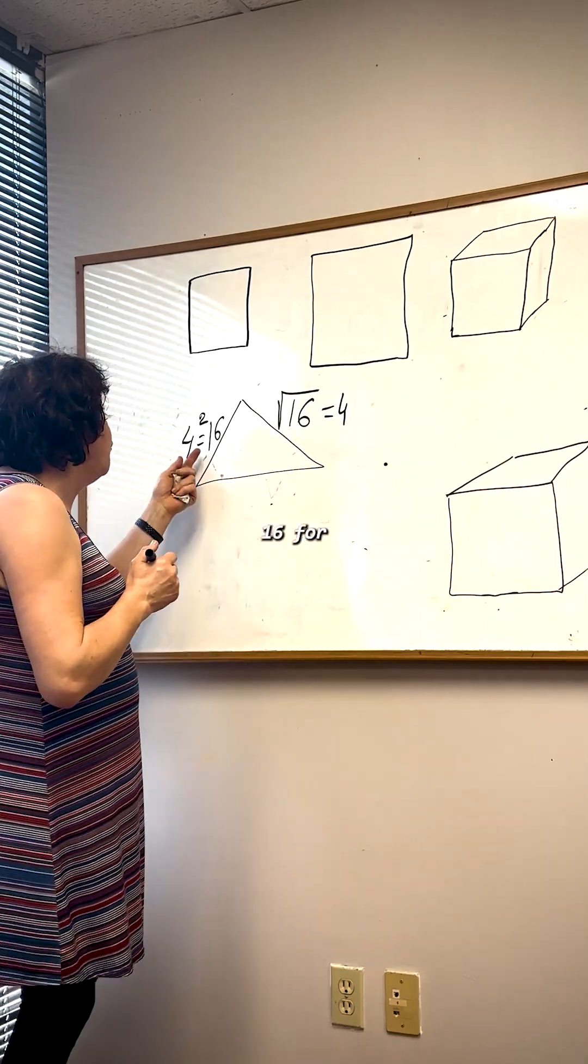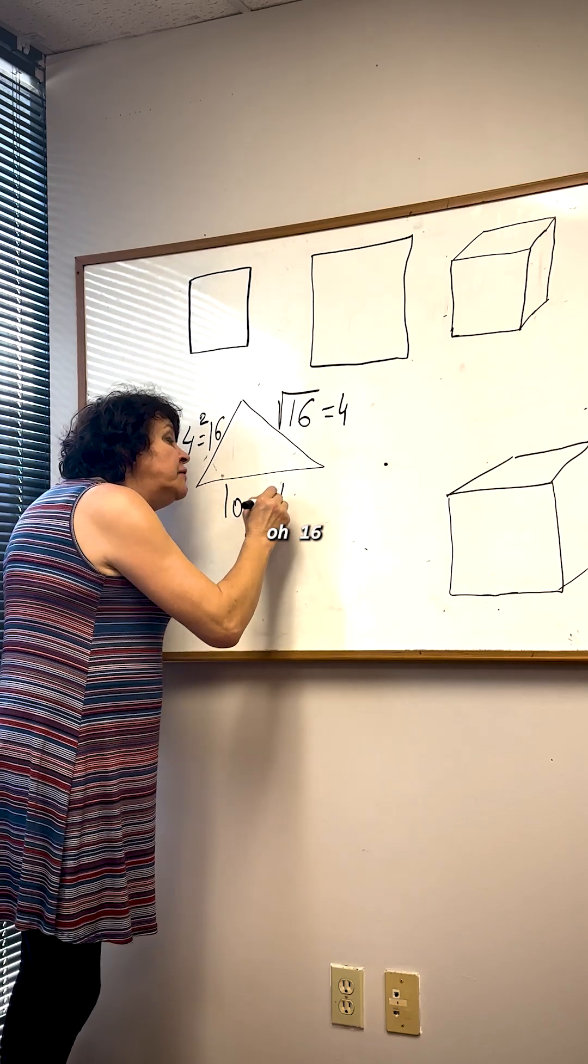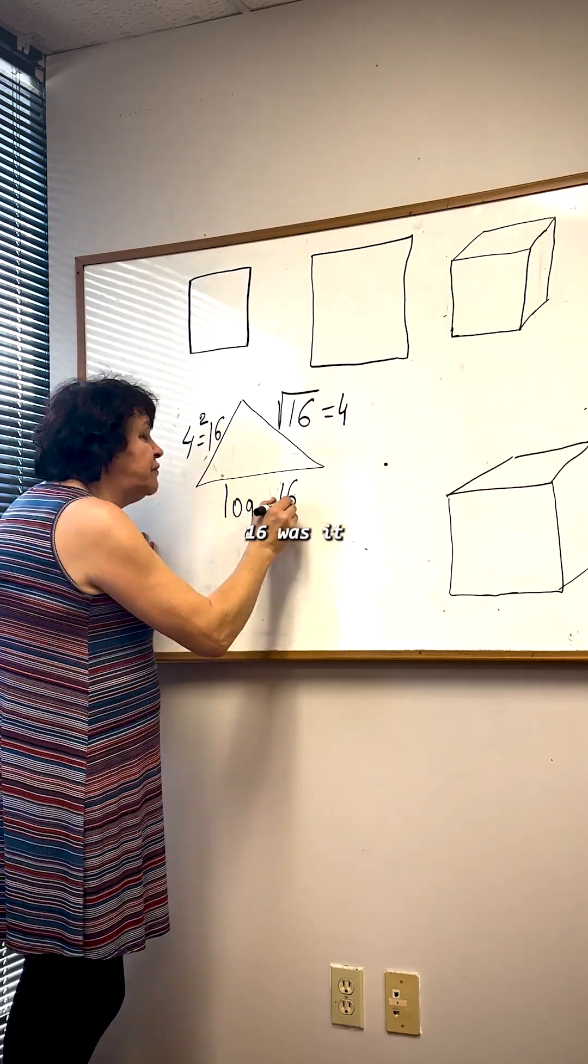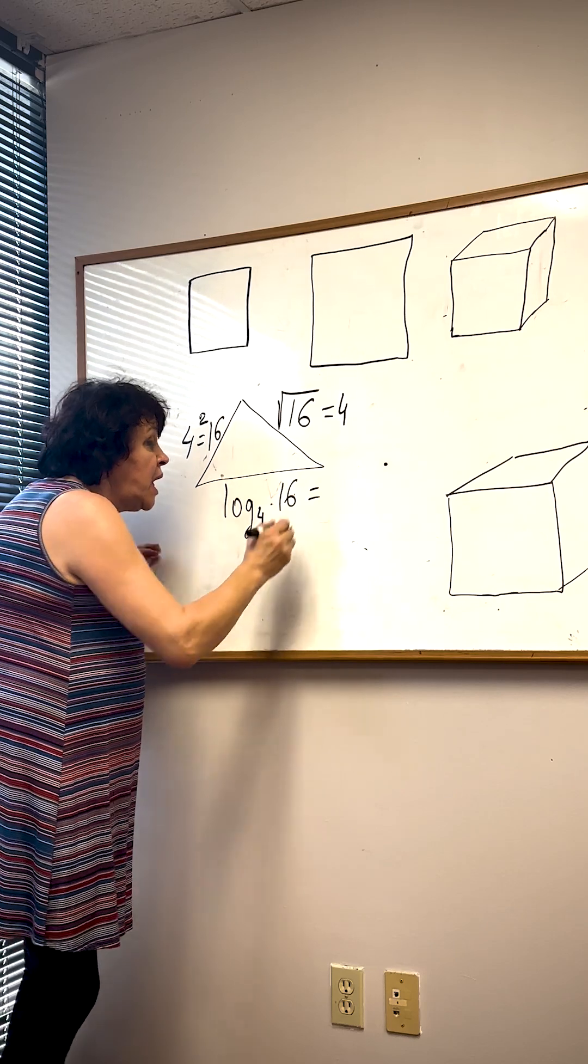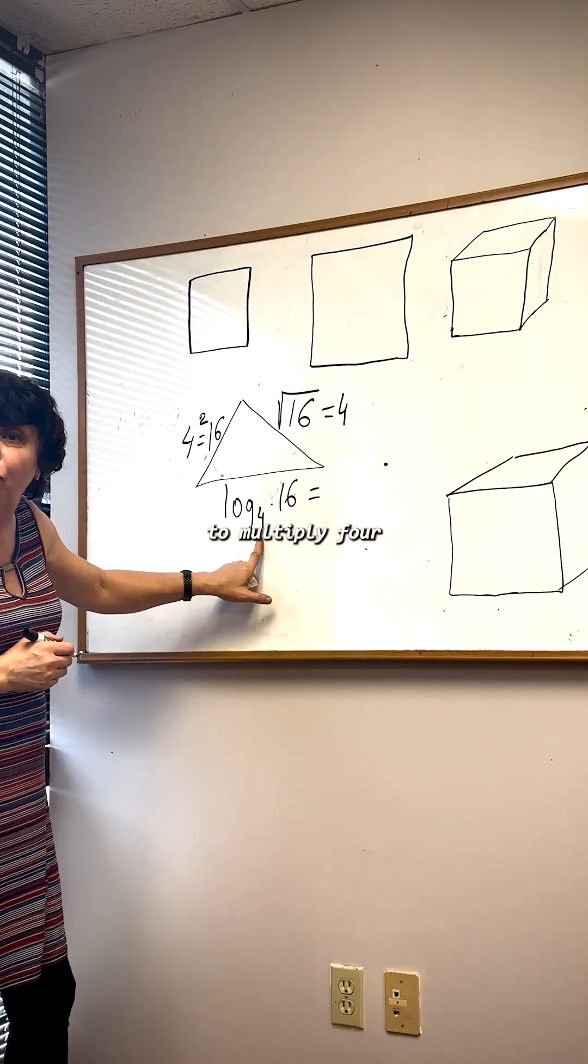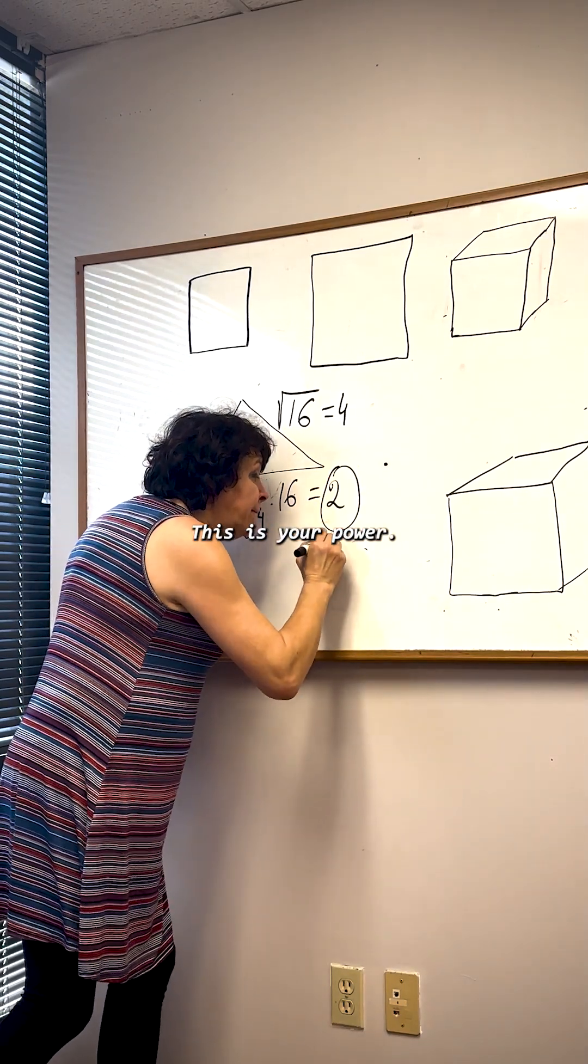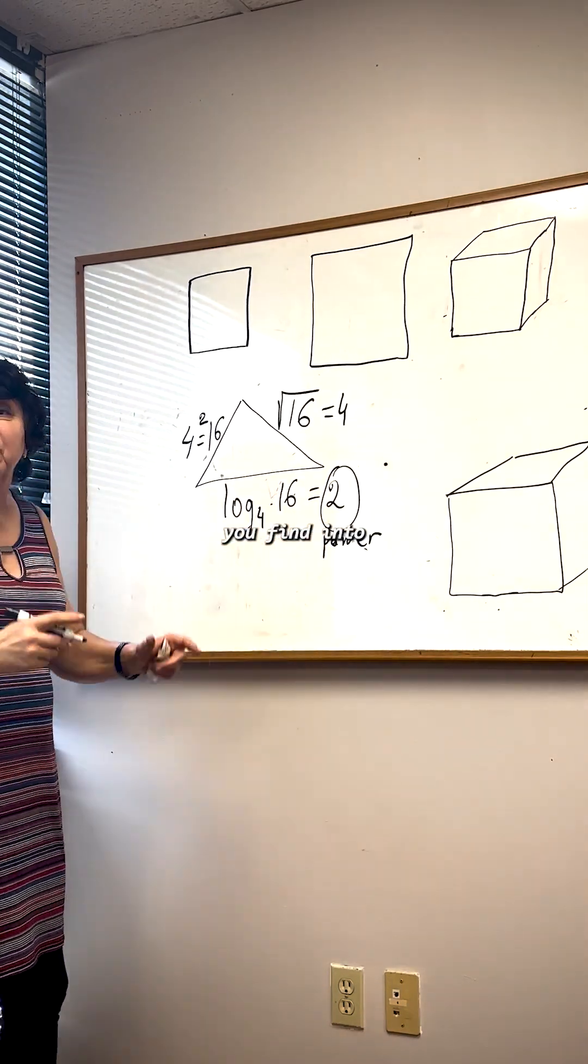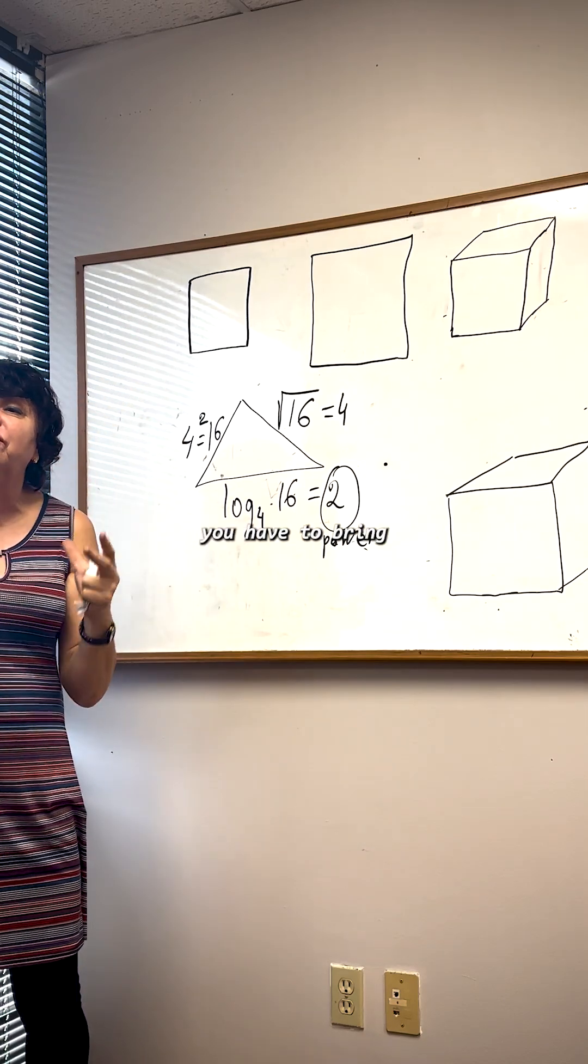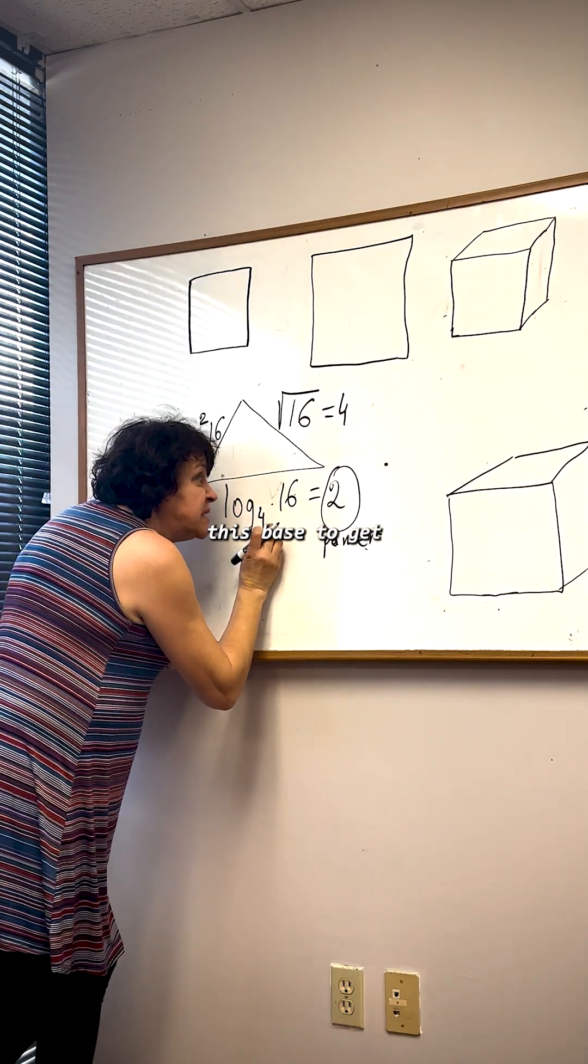How many times you have to multiply 4 by itself to get 16? Two times. This is your power. When you're looking for logarithms, you're finding to which power you have to bring this base to get the result.